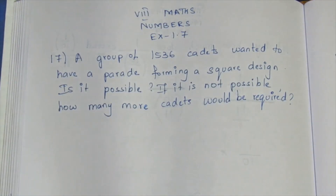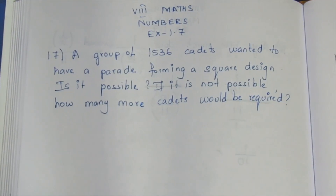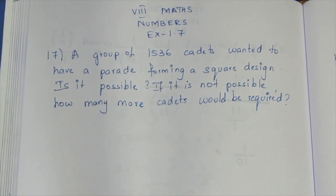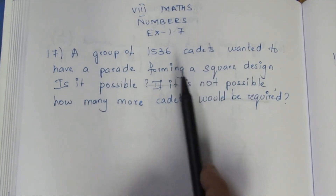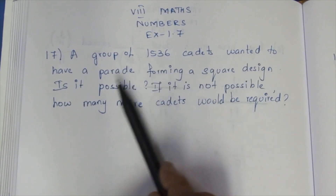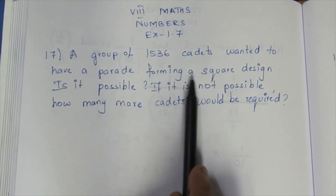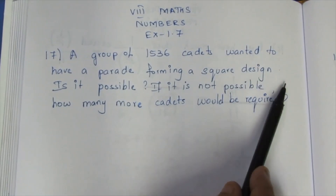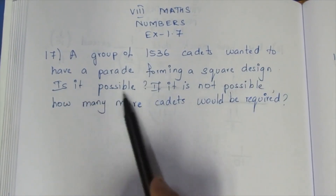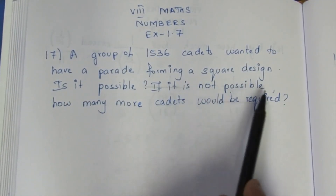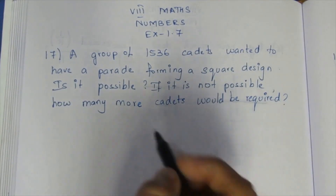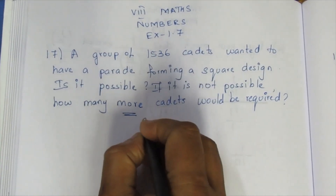Hello viewers, I am Aikli. In this exercise, question 1.7, number 17: A group of 1536 cadets wanted to have a parade forming a square design. Is it possible? If it is not possible, how many more cadets would be required?